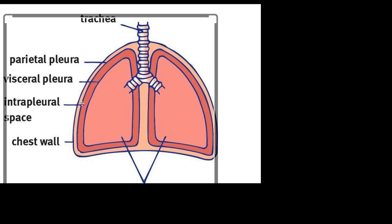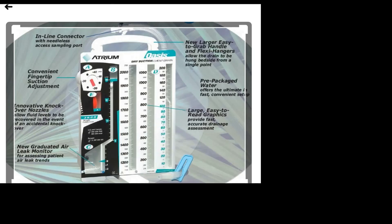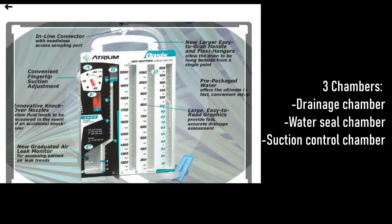Once the chest tube is inserted, it is connected to a drainage system. This drainage system has three chambers: the first is the drainage chamber or collection chamber, the second is the water seal chamber, and the third is the suction chamber.